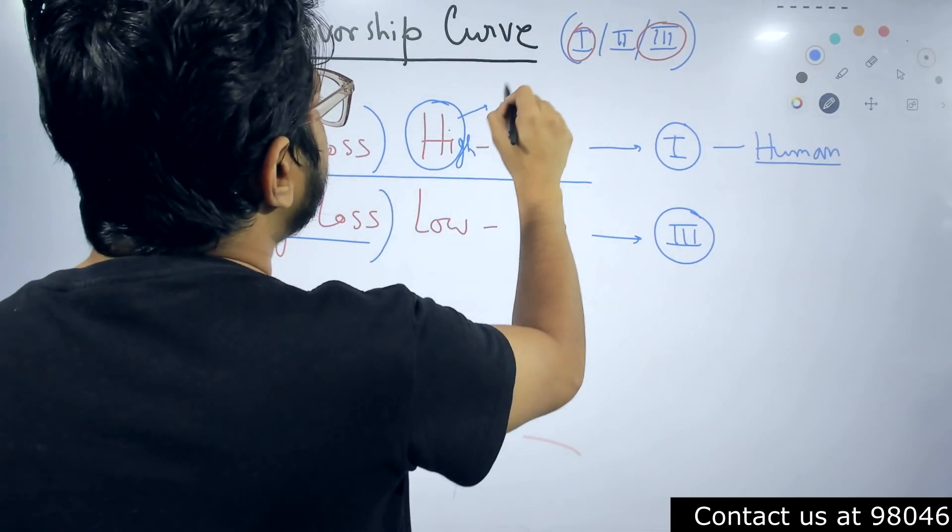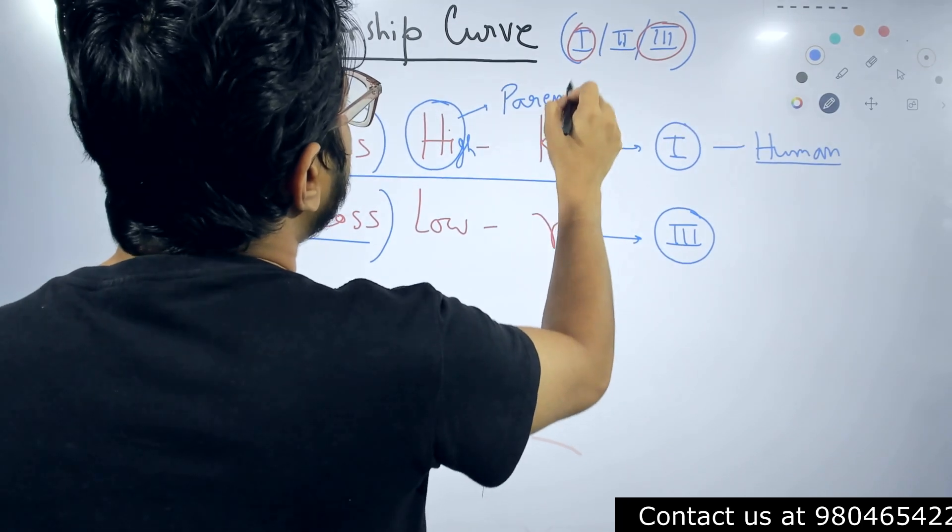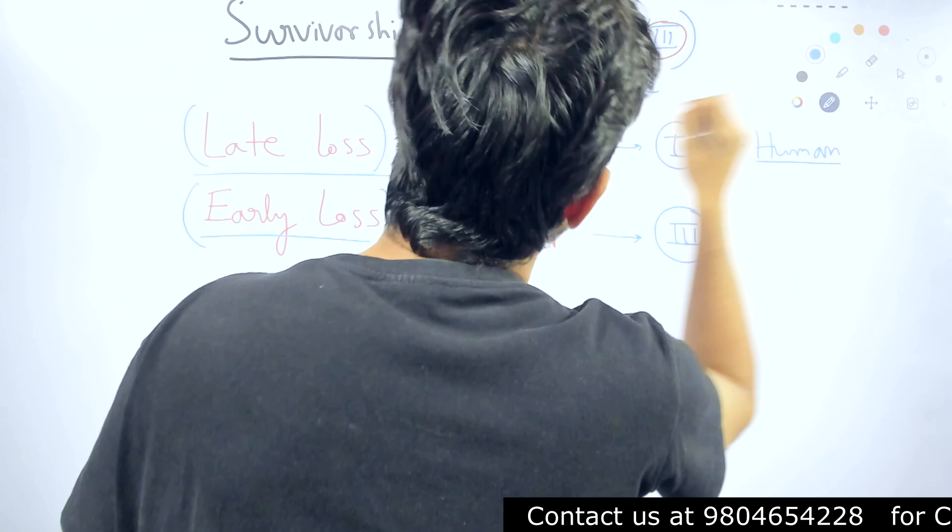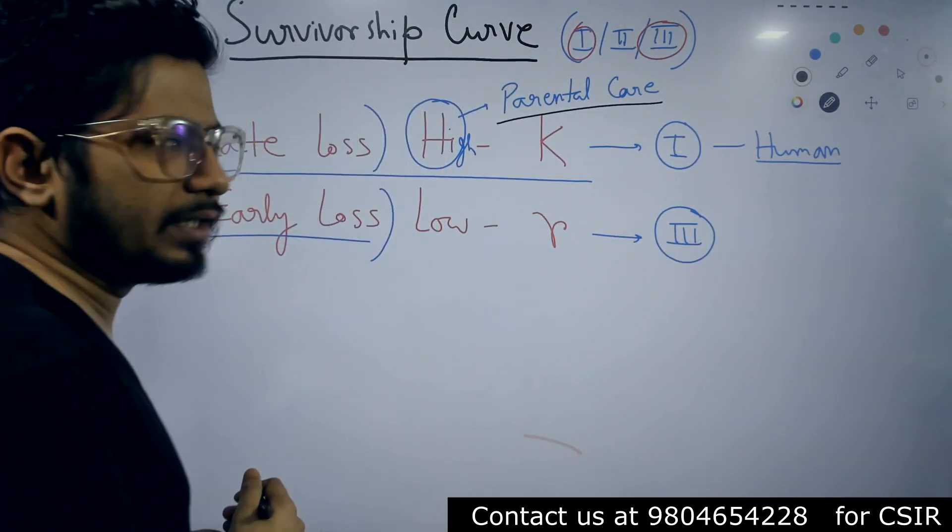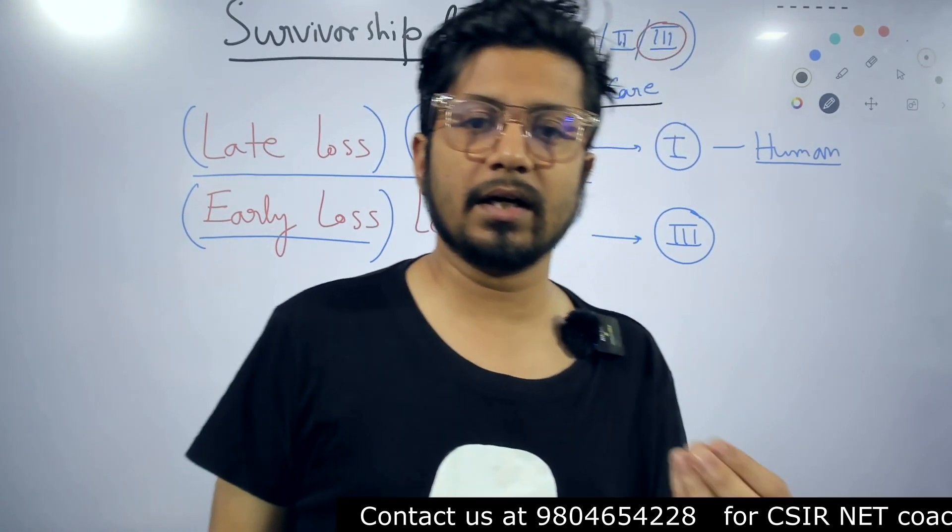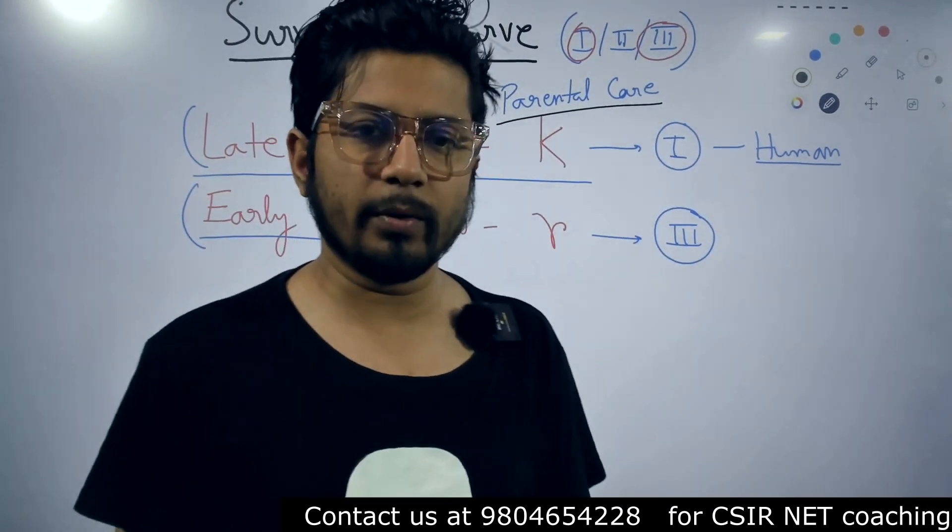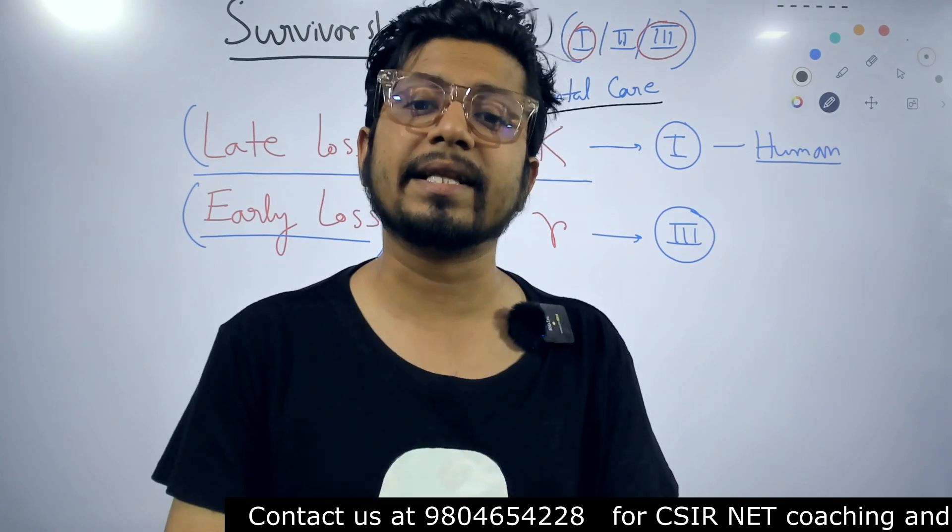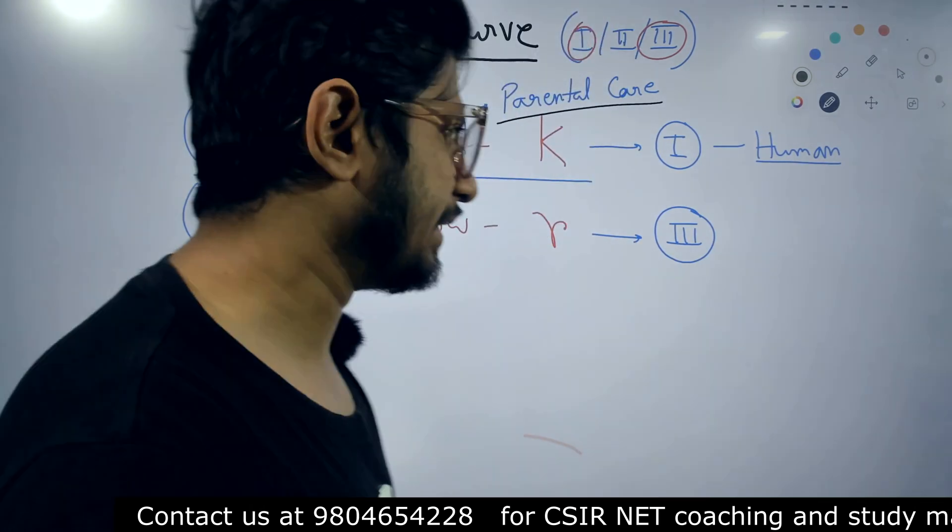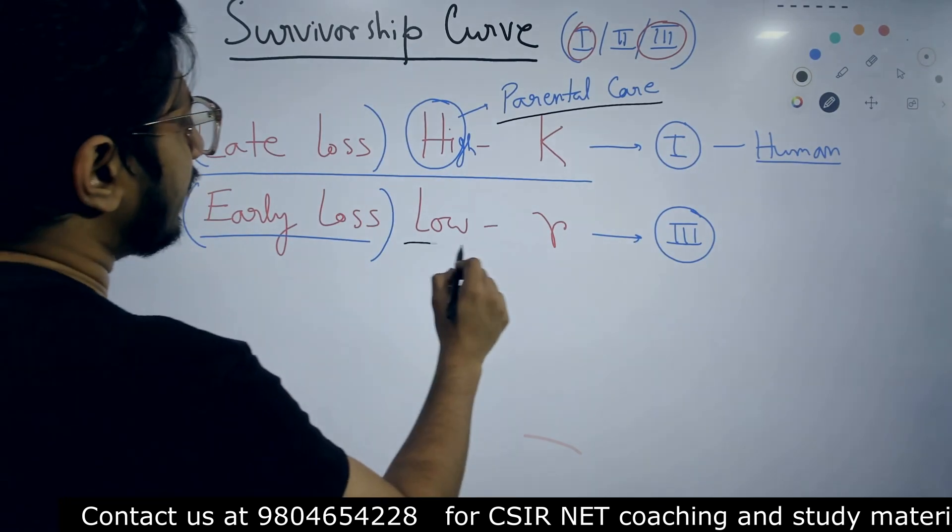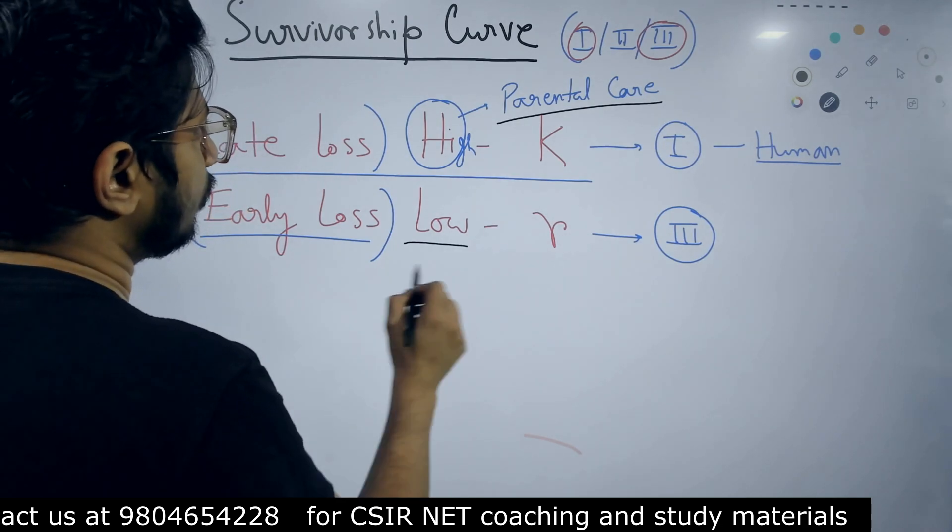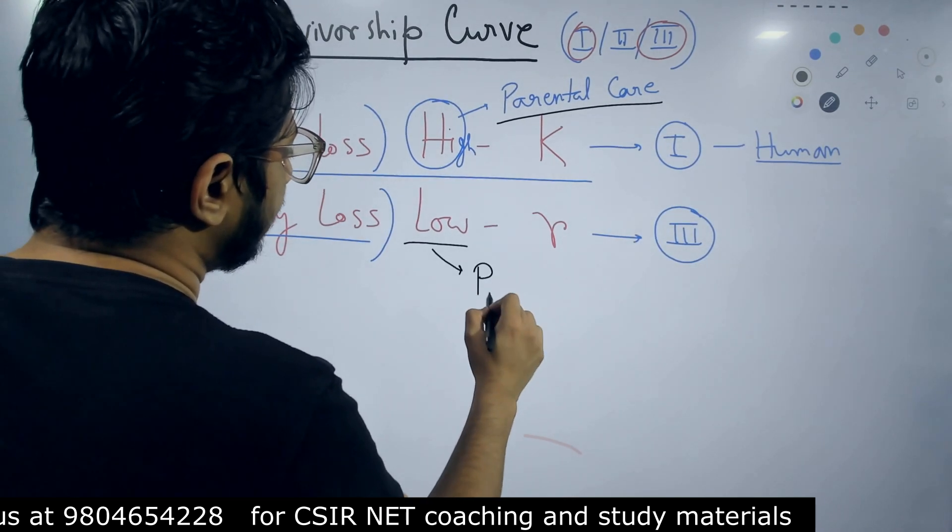Now if I go to high—high for what? High parental care. The second parameter is parental care. The parental care received by humans is huge. That is the reason most of the offspring at low age will survive, because they are covered by parental care. Where the parental care received by individuals here is low—low parental care. The parental care is low for Type 3 survivorship curve individuals.